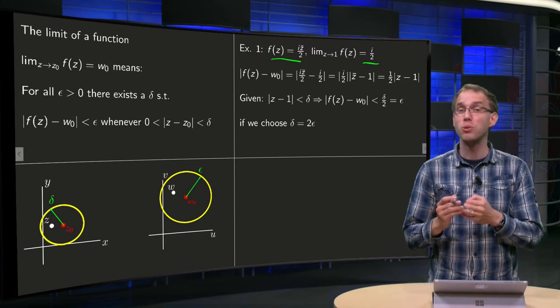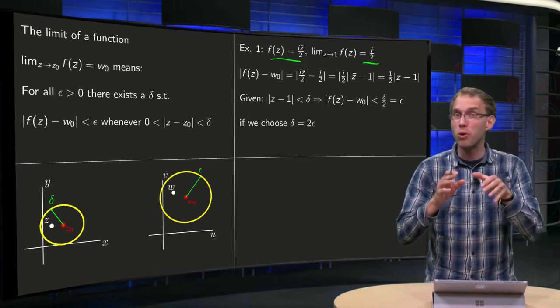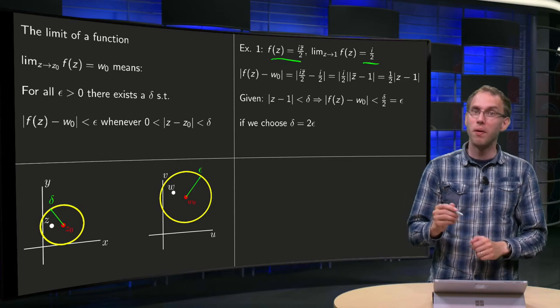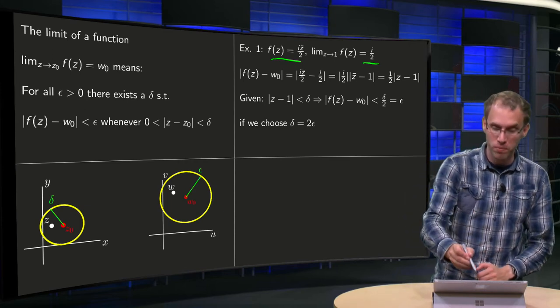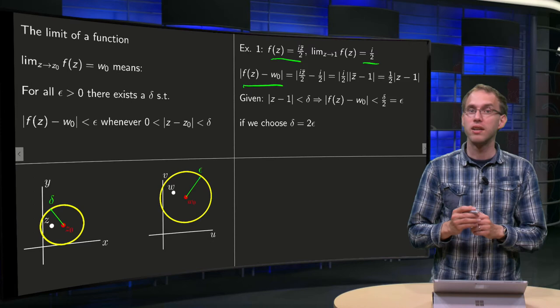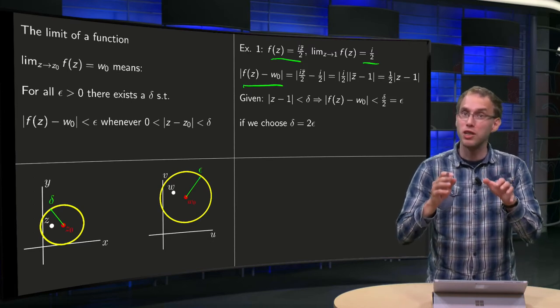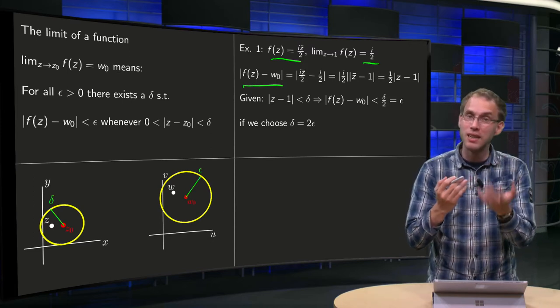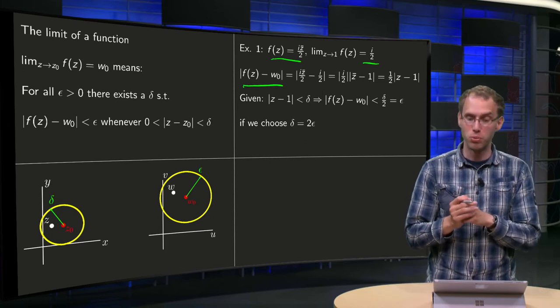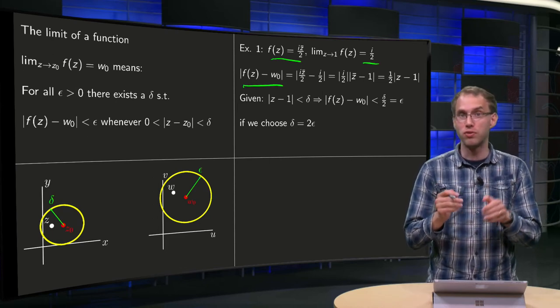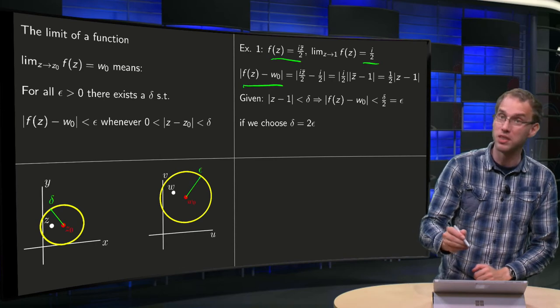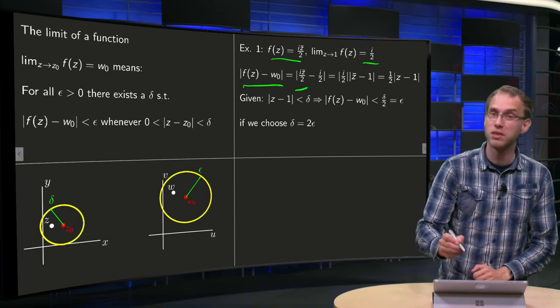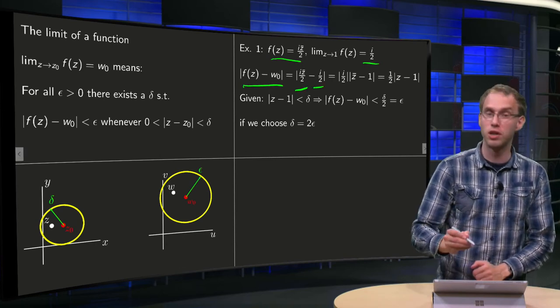So why is that true? Why does it hold according to the definition? Well, then we need to show that this quantity, |f(z) - w₀|, can become arbitrarily small provided we take z close enough to 1. This quantity, the modulus of f(z) - w₀, is in this case iz̄/2 - i/2.